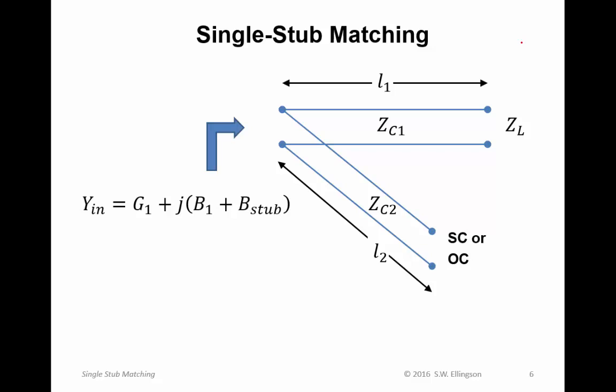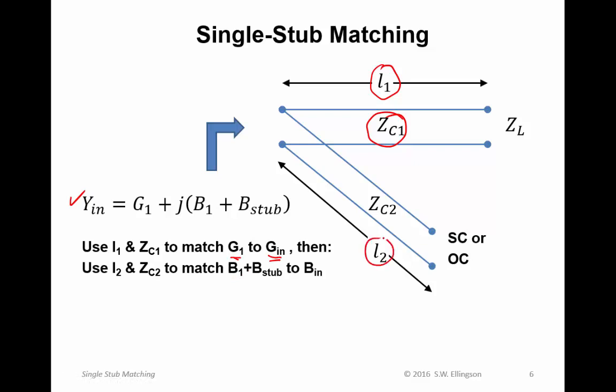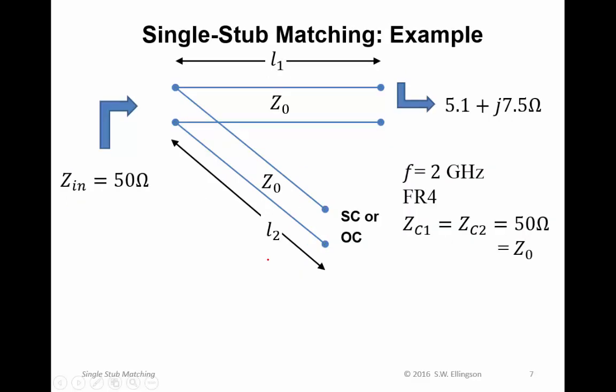Now matching. I've rewritten this expression for the admittance of the single stub structure. The procedure is this. And this is the single most important slide in the lecture, because it gives the technique. The idea is to use L1 and Z_C1 to match G1, which is the real part of the admittance that we seek. This gets the real parts of the admittance matched up. Then we use L2 and Z_C2 to match B1 plus B_stub to B_in. So this will tell us what B_stub should be.